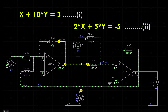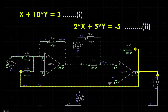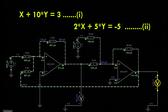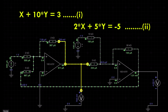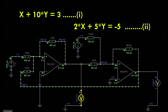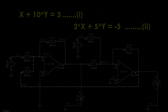This output node is the value of y, and this node will give you the value of x. That means the output of op-amp 2 will give us the x value — this voltmeter will give the x value. And the output of op-amp 1 — this voltmeter — will give the y value. So this is x and this is y. You can see that this circuit is already simulated.